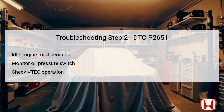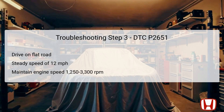For the third step, you should drive the vehicle on a flat road at a steady speed of no less than 12 miles per hour while maintaining an engine speed between 1,250 to 3,300 RPM for a minimum of 4 seconds. This driving condition simulates normal operational parameters and assesses the VCM system's functionality when under demand. Observing the performance of the rocker arm oil pressure switch during this step is vital, as variations in pressure readings may help identify where the system may be failing. Ensuring that these parameters are met is essential for confirming or denying the presence of the issues contributing to the P2651 code.